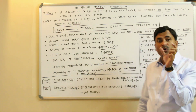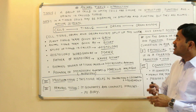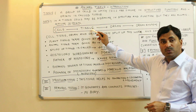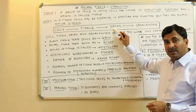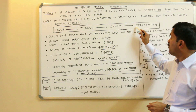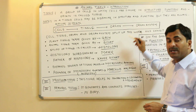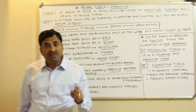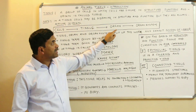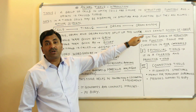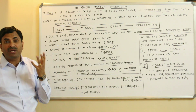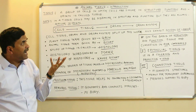A group of cells combines to form a tissue, tissues combine to form an organ, and two or more organs combine to form an organ system. This means all multicellular organisms, all higher organisms, have organ systems.